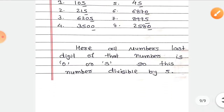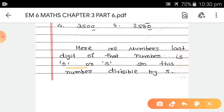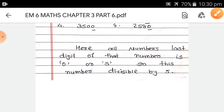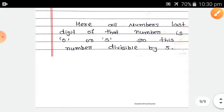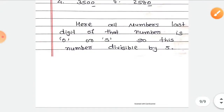So we can easily say that all these numbers have a last digit of 0 or 5, so all of them are divisible by 5. Thank you.